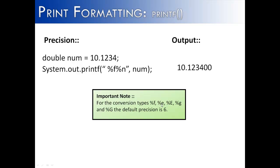And also, E, capital E, capital G, and lowercase g, they all have a default precision of six if no precision is specified. So they will add the trailing zeros if necessary.